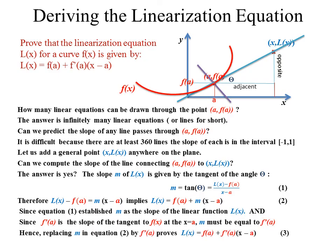Replacing M in the equation with F prime of A gives us the desired result: L of X equals F of A plus F prime of A multiplied by X minus A. That's the proof. In our next video we'll do exercises to show that linearization is truly important and useful. Thank you and have a great day.